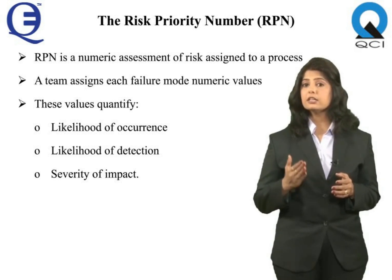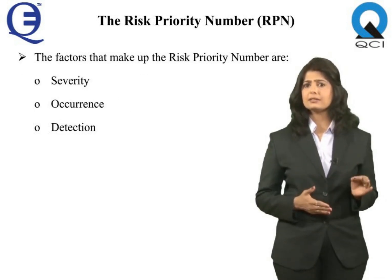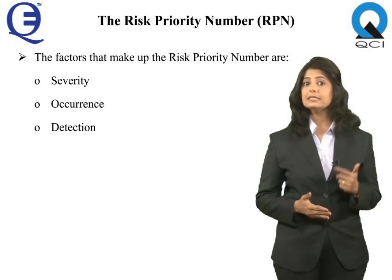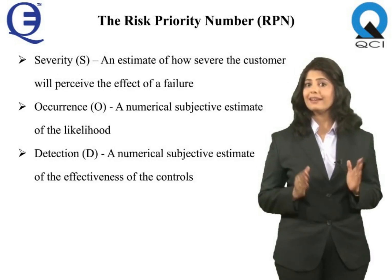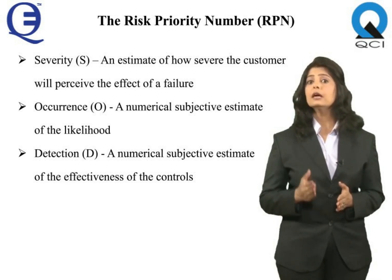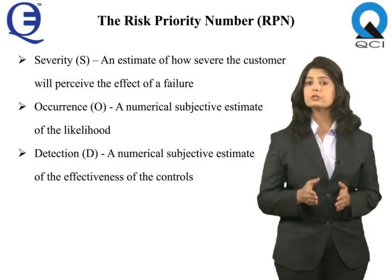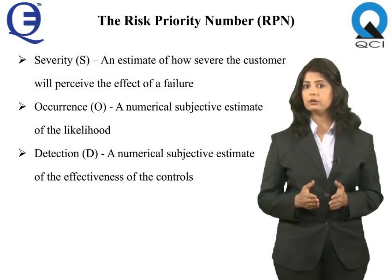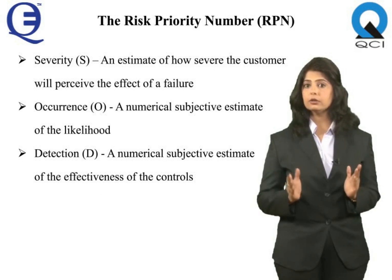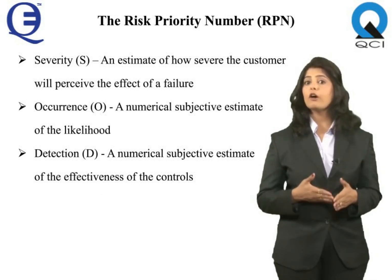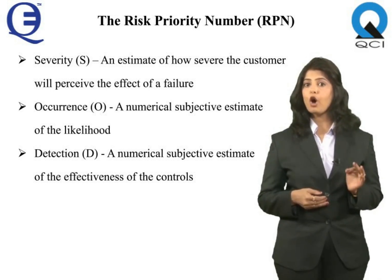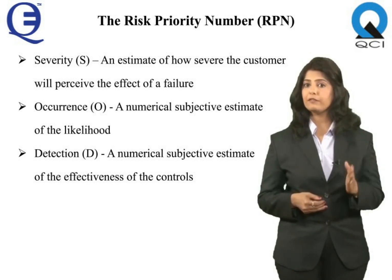The factors that make up the RPN are severity, occurrence, and detection. Severity (S) is a numerical subjective estimate of how severe the customer, next user, or end user will perceive the effect of a failure. Occurrence (O) is a numerical subjective estimate of the likelihood that the cause of a failure mode will occur during the design life, or during production in the case of a process FMEA.